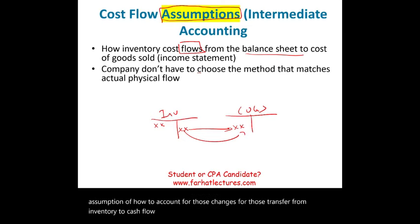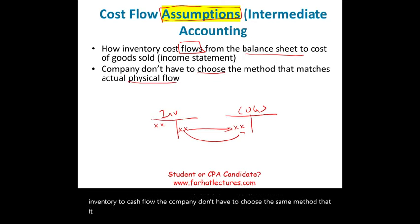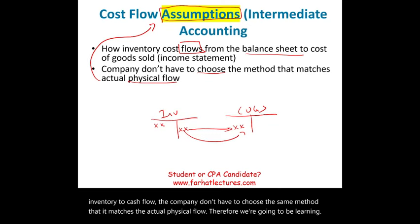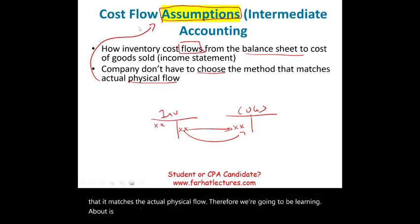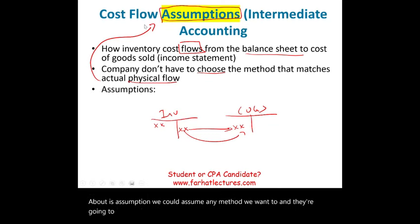A company doesn't have to choose the method that matches the actual physical flow of inventory. Therefore, what we're learning about are assumptions — we could assume any method we want to, and we're going to learn about various assumptions.